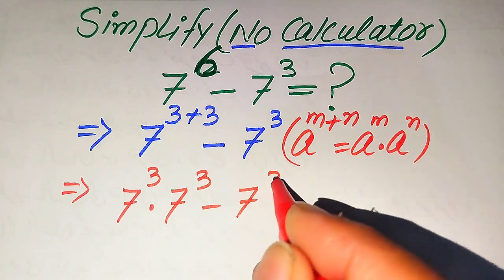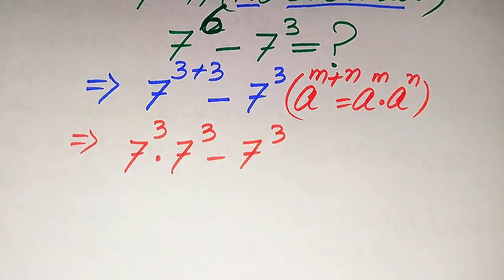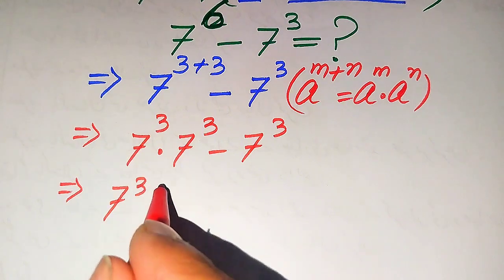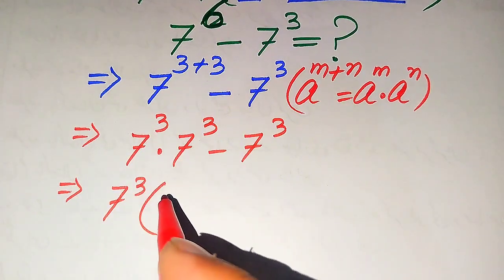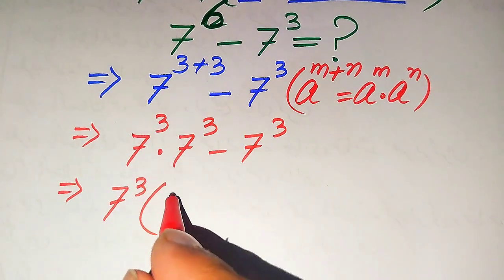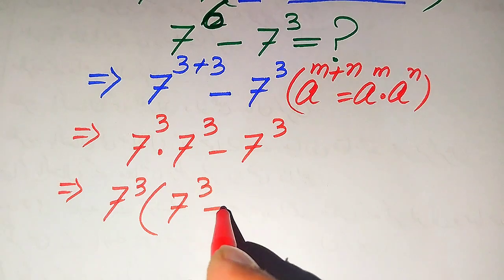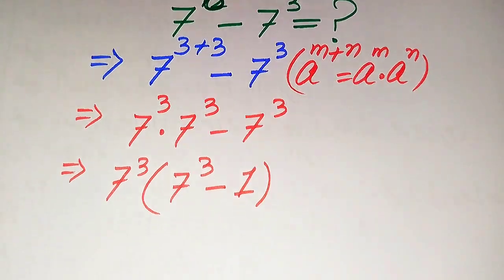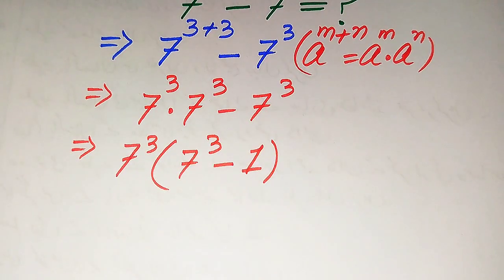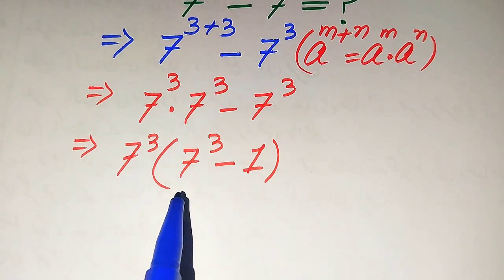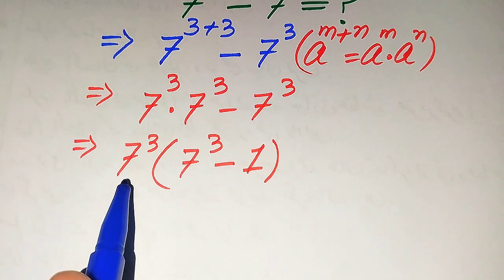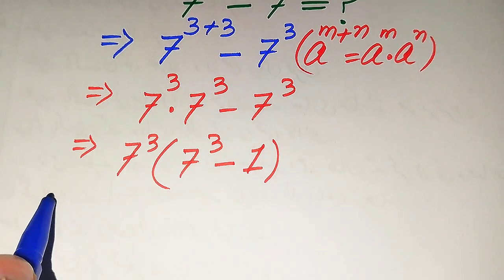In the next step we take 7 cubed as a common factor. When we factor out 7 cubed, the remaining values are: from the first part we get 7 cubed, and from the second part we get 1. So the expression becomes 7 cubed times (7 cubed minus 1).